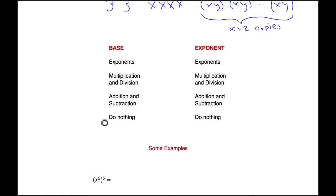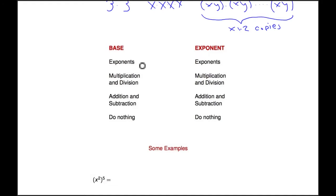This hierarchy should be familiar if you know anything about order of operations — exponents, multiplication and division, addition and subtraction, then do nothing. That's the order if you're talking about order of operations. So here we have what's happening in the base, and here we have what's happening in the exponent. We're going to draw lines that relate what should be happening. If you have a base being raised to an exponent, or an exponent being raised to an exponent, that corresponds to one level down: multiplication and division.